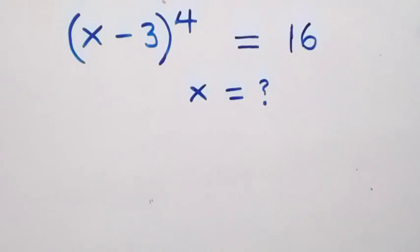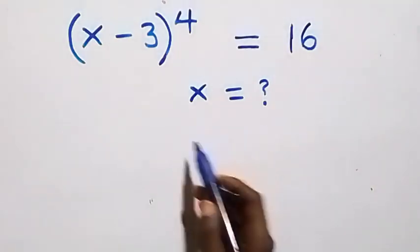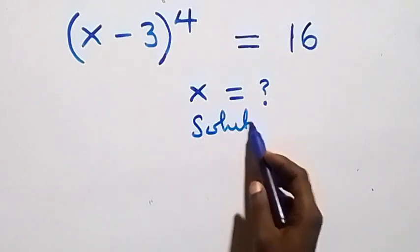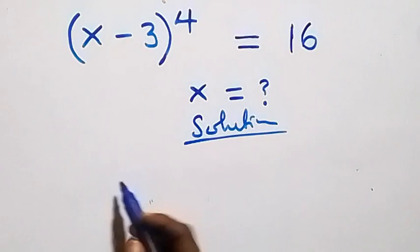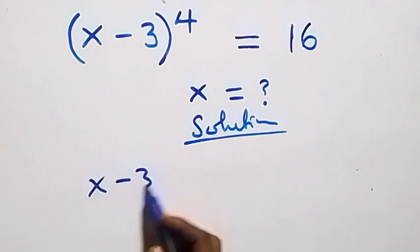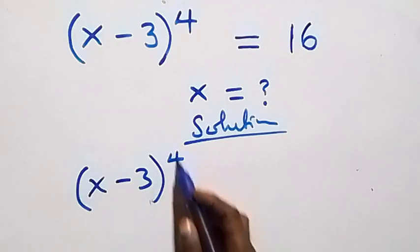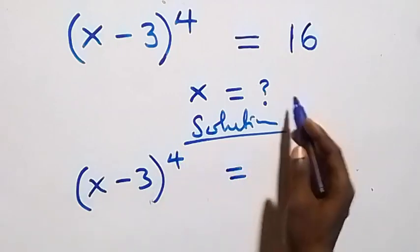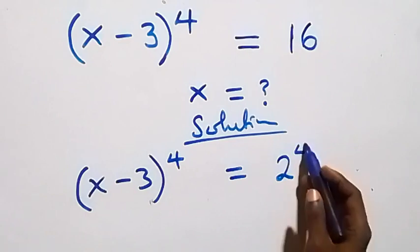Hello, you are welcome. We will solve this nice exponential equation. What we are given here, we can write as (x minus 3) raised to the power 4, which equals 16. And 16 can be written as 2 raised to the power 4.